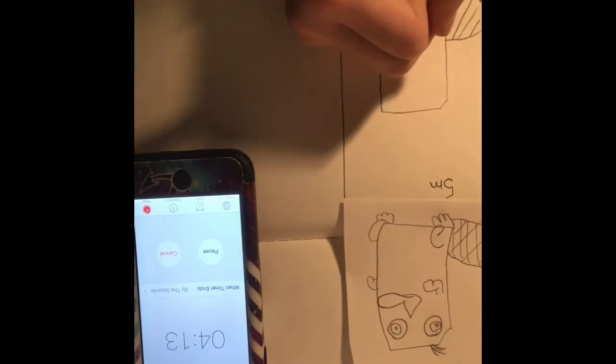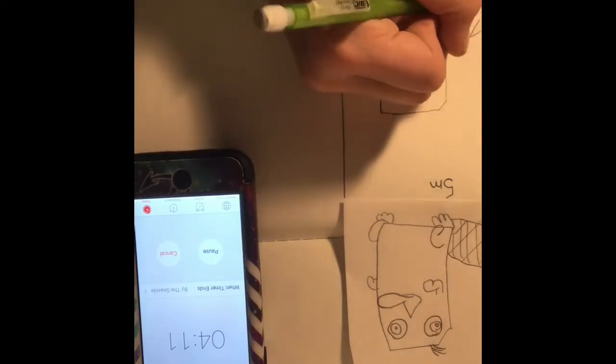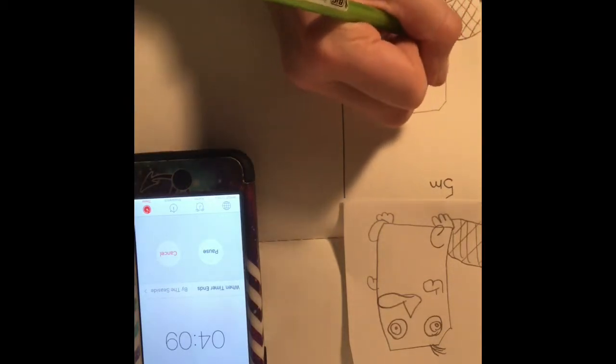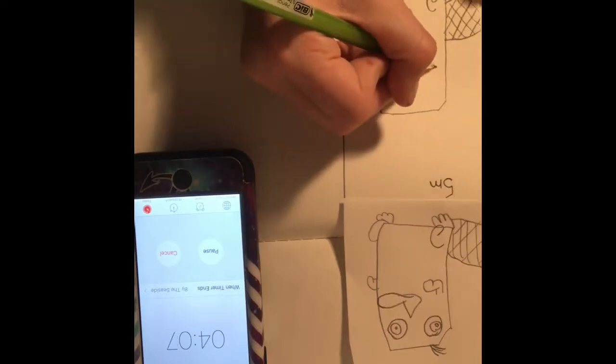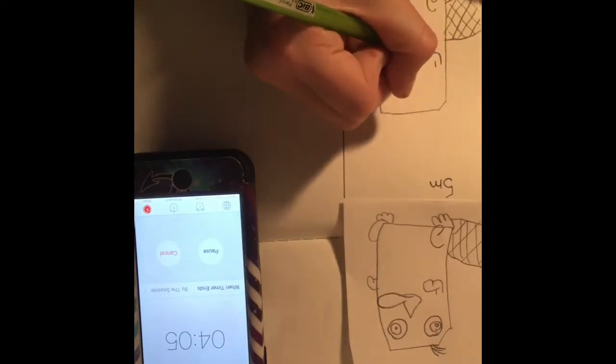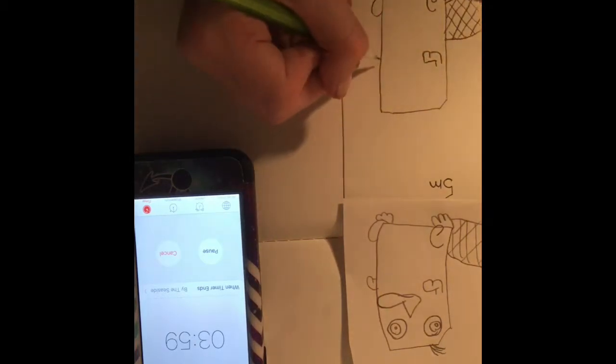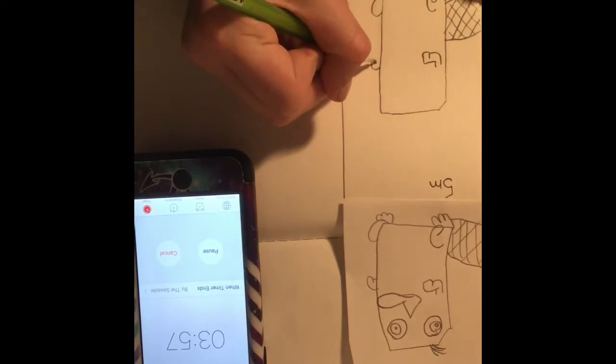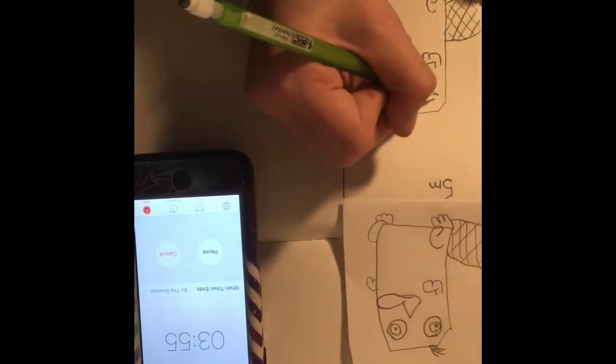Now you can see the timer very well. Now I'm just drawing Perry the Platypus. Perry the Platypus is from this show called Phineas and Ferb. I thought that was his mouth for some reason.